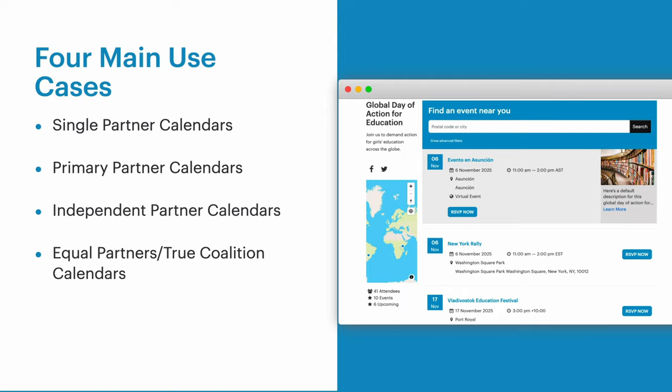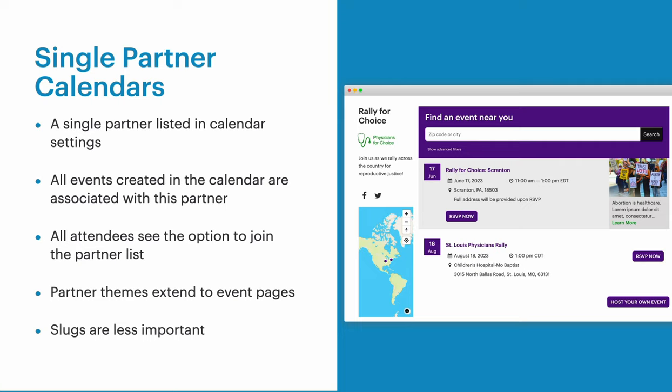Let's start with single partner calendars. Single partner calendars are the easiest type to explain — you're only working with one other partner to run these events. That single partner will be listed as a co-host of all events in the calendar, helping you recruit and support hosts as well as recruiting attendees. Whenever an event is created in this calendar, it will be associated with that single partner, and attendees viewing events will always see that single partner on the event page.